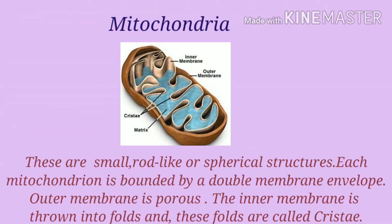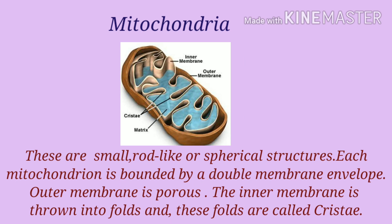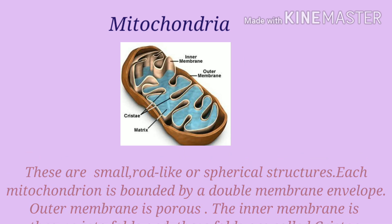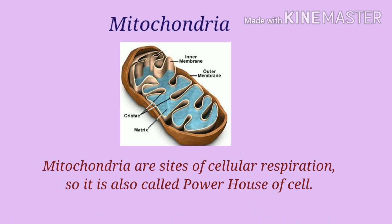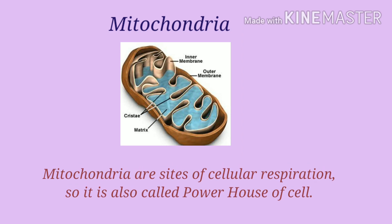Mitochondria are small, rod-like or spherical structures. Each mitochondrion is bounded by a double membrane envelope. The outer membrane is porous. The inner membrane is thrown into folds and these folds are called cristae. Mitochondria are the site of cellular respiration, so it is also called the powerhouse of the cell.